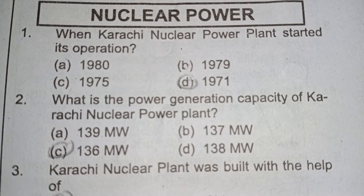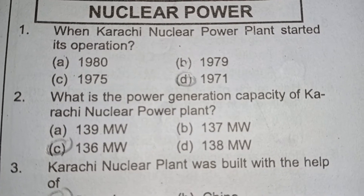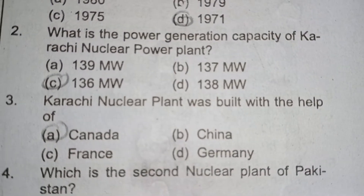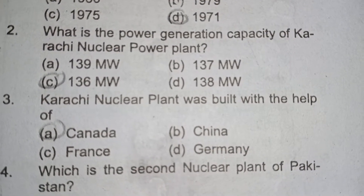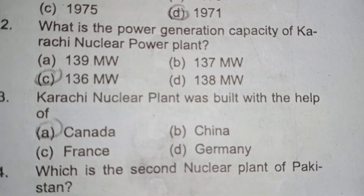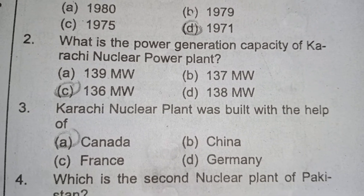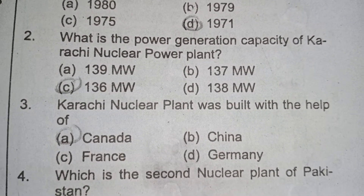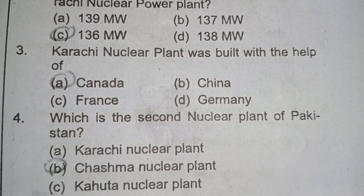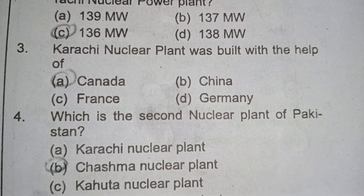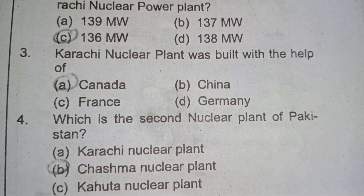Option D is the correct answer: 1971. The next question: what is the power generation capacity of Karachi Nuclear Power Plant? Option C is correct: 136 MW. Third question: Karachi Nuclear Plant was built with the help of Canada.